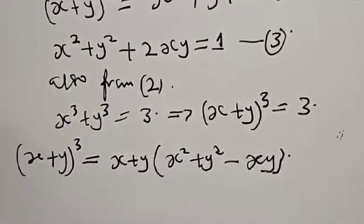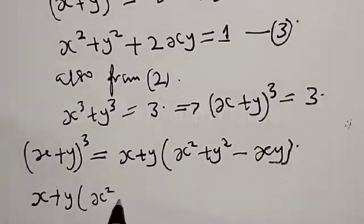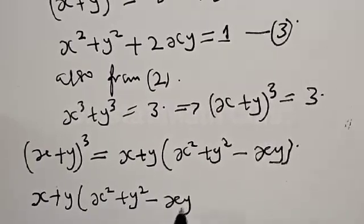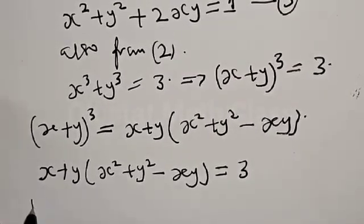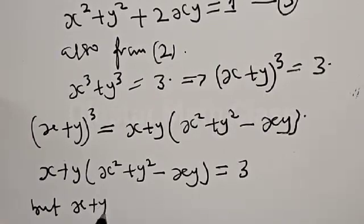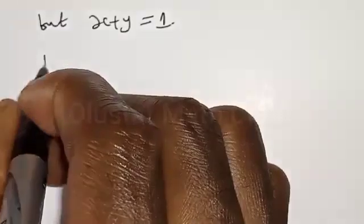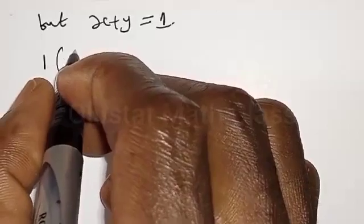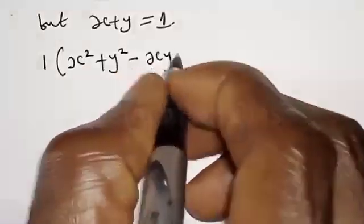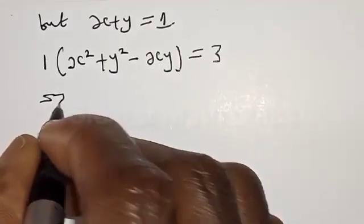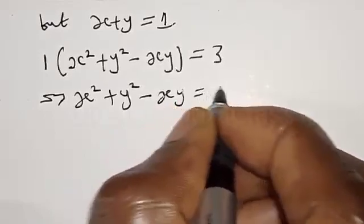Therefore equation 2 can be rewritten as s plus y, into s squared plus y squared minus sy, equal to 3. But recall that s plus y from equation 1 is equal to 1. Therefore this becomes 1 into s squared plus y squared minus sy equal to 3, which implies s squared plus y squared minus sy equal to 3.